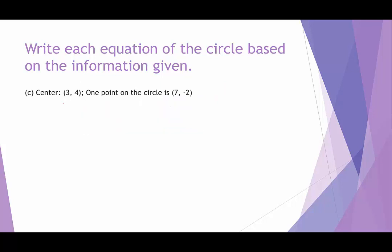In this example, we're given the center and told that one point on the circle is 7, negative 2. We can determine r squared by plugging into x minus h squared plus y minus k squared equals r squared. We label the center as h, k and the point on the circle as x, y, then plug them in to find r squared — we don't even need to know the radius itself.